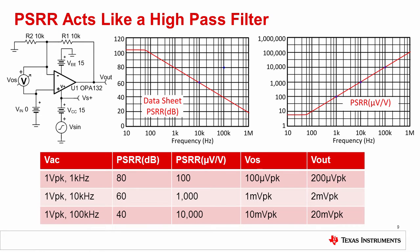Let's take a closer look at the AC PSRR curve. The key point here is that the PSRR curve is a rejection and not a gain curve. You might look at the PSRR graph and think that it is a low-pass filter. In fact, if you draw the PSRR curve as a gain in microvolts per volt rather than a rejection in dB, you see that it is actually a high-pass filter.